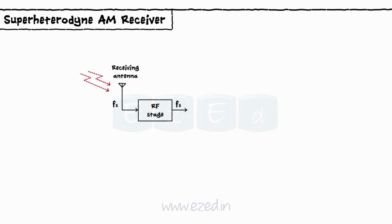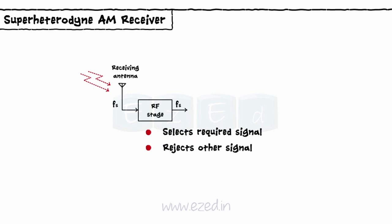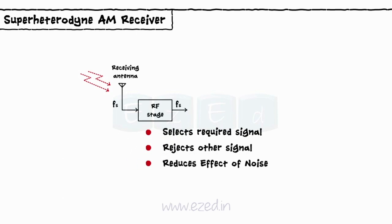RF stage: The RF stage is an amplifier which selects the required signal and rejects all other received signals. It also reduces the effect of noise. At its output, we obtain the desired frequency signal, say FS.